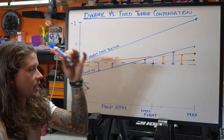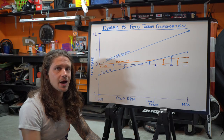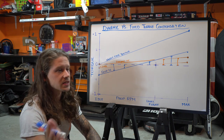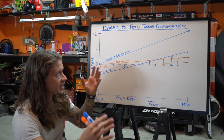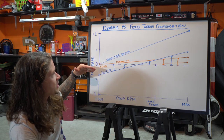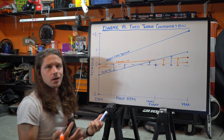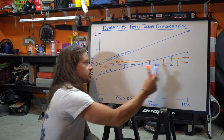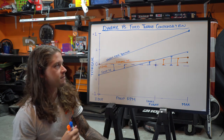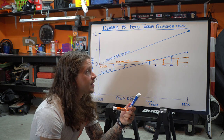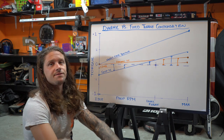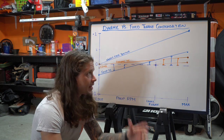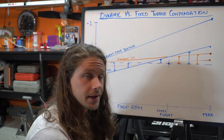I want to combine dynamic and fixed torque compensation on the Pluma to make it absolutely perfect. The goal is minimal pilot input on either side of that zero torque line — just a butt cheek here or there, no brake input, and very minor weight shift. The Pluma already has awesome weight shift, so I think a combined system would be great on that machine. If you're interested in following along with that project, be sure to subscribe. If you liked this video, like it. Thanks for watching.